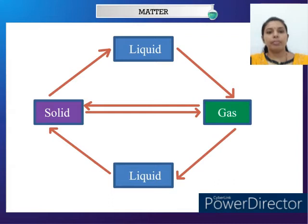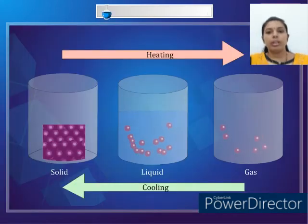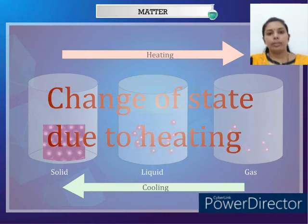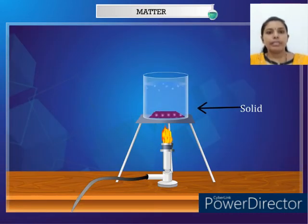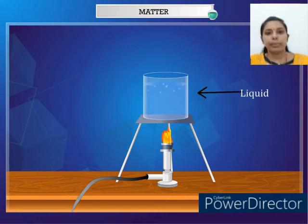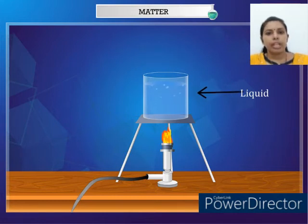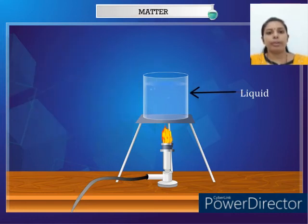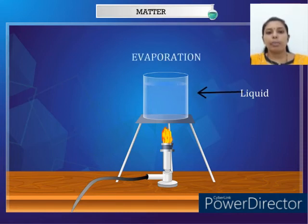Heat causes change of state. Matter can be changed from one form to another by heating and cooling. If we heat a solid, it will soon turn into liquid — this process is called melting. If we heat the liquid, we will see bubbles rising to the surface — this is called boiling. Soon the liquid will change into vapour. The change from liquid to vapour on heating is called evaporation.